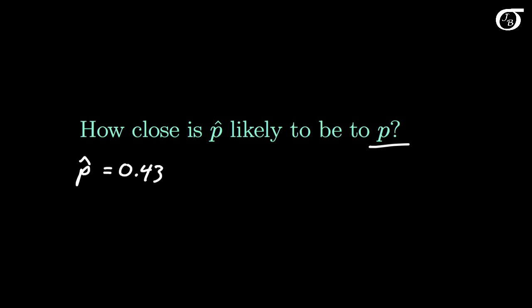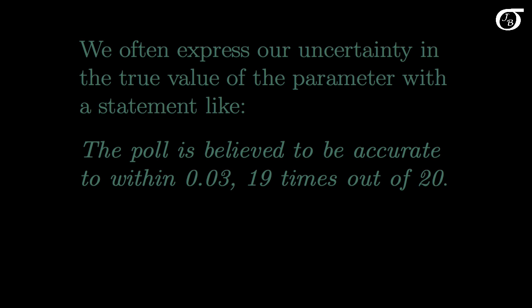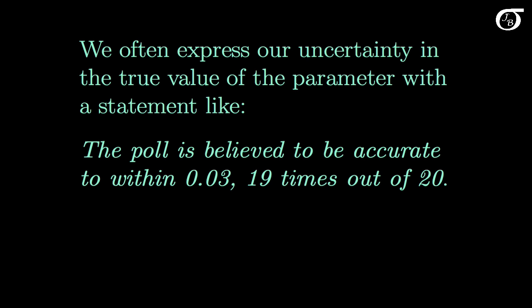We're not going to be able to say with certainty how close p-hat is to p, because p is an unknown quantity to us. But we would like some way of expressing how close we feel this p-hat value is to the true value of p. And the way we choose to do so very frequently is through a confidence interval. We often express our uncertainty in the true value of the parameter with a statement like, the poll is believed to be accurate to within 0.03, 19 times out of 20.